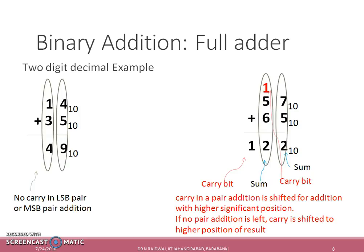The full adder concept can be explained by two digit decimal sum example. If we add two decimal numbers of two digits, then if sum of any pair of two numbers is less than 10, no carry is obtained.